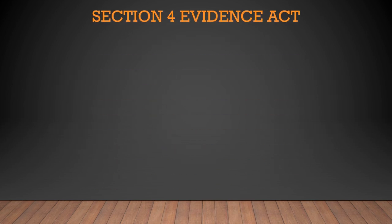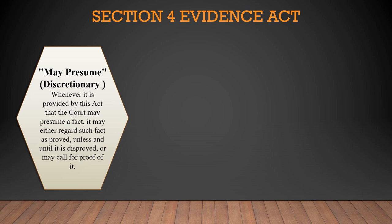Section 4 of the Evidence Act describes various types of presumption. The first one is may presume. As the word 'may' itself indicates, it expresses permission or possibility — so it is discretionary. It explains that whenever it is provided by this act that the court may presume a fact, it may either regard such fact as proved unless and until it is disproved, or may call for proof of it.